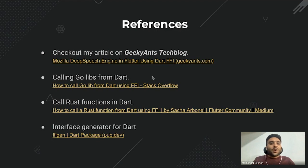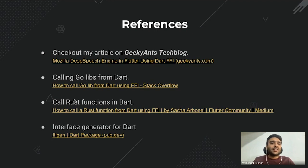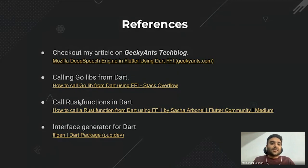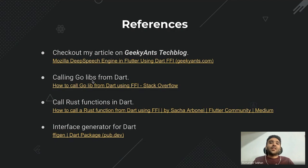We're not limited to C code only — as I mentioned on the first slide, we can also call Go and Rust functions from Dart. Go is a popular language and Rust is gaining popularity because of its performance matching C.